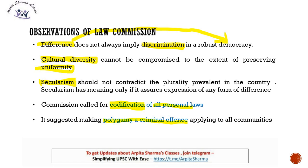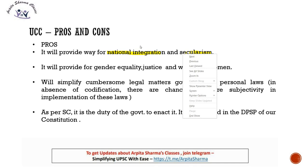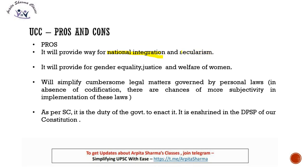Now let us look at the arguments for and against Uniform Civil Code. The points in favor come largely from the Supreme Court's judgment in the Shah Bano case. First, UCC will provide for national integration and secularism — when different communities' personal laws become the same, it will help integrate the nation. In the Indian context, secularism means equal respect for all religions. Second, UCC will provide for gender equality, justice, and welfare of women — provisions in personal laws that work against women will be removed.